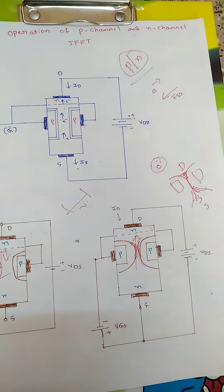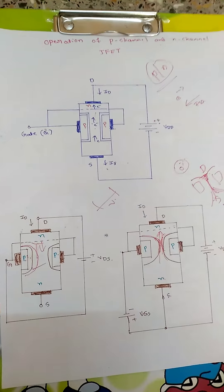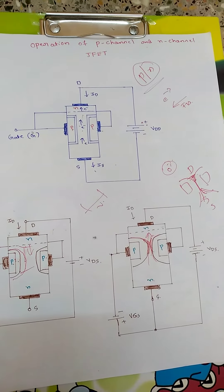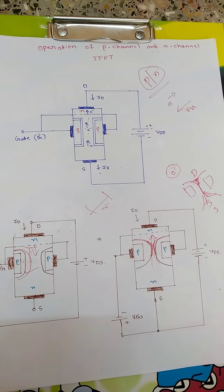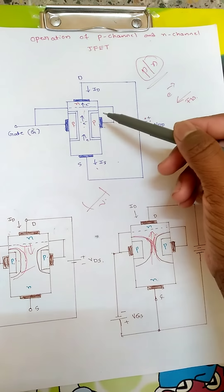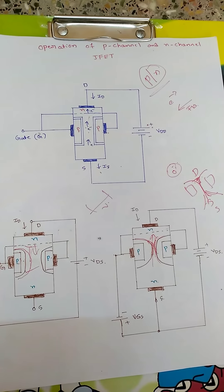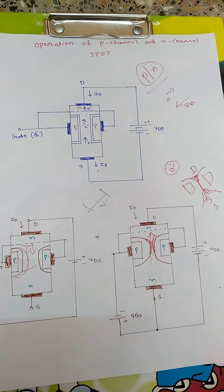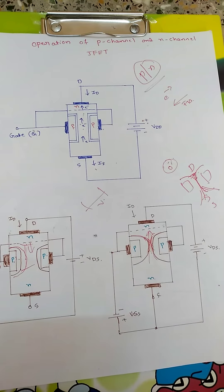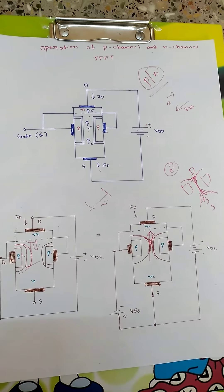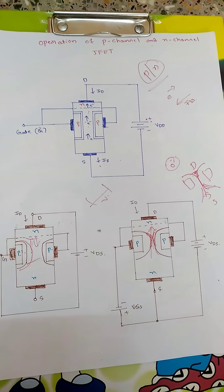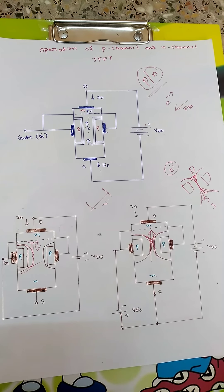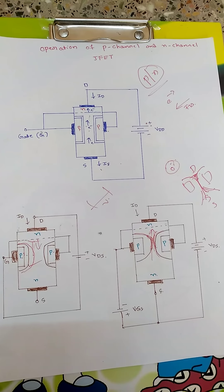By increasing or decreasing the voltage between the gate terminals, we can control the amount of current flowing through the JFET. That is why it is called a voltage-controlled device — the voltage applied between the two gate terminals determines the amount of current that can flow. This is why BJT is called a current-controlled device whereas JFET is called a voltage-controlled device. That covers how a JFET works and how varying the gate voltage gives varying amounts of current.